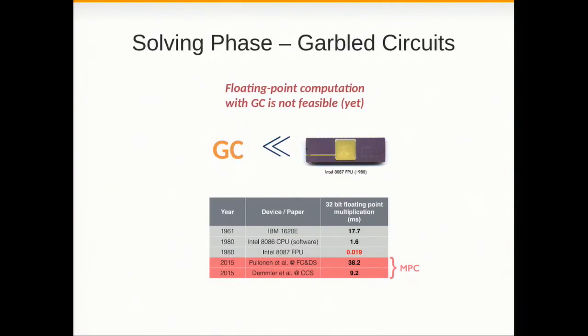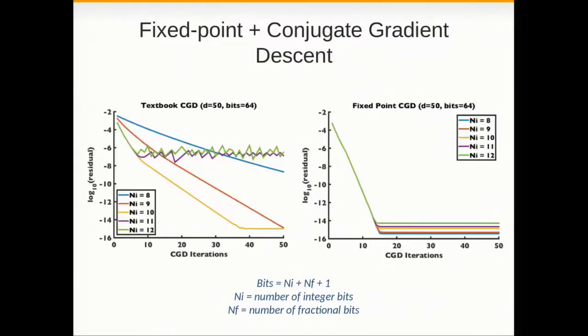But the problem is that in garbled circuits, we cannot do floating point computations yet. We're not quite there yet. And to give you a sense of where we are, we are somewhere in the 60s. So this is like computation in the clear, and this is computation in MPC. But we are getting there. So what happens when you implement the textbook CGD using fixed point arithmetic is that you lose the nice convergence properties of the algorithm in floating point. So in our paper, we show how to fix that and propose a fixed point CGD, a version of CGD that recovers these good convergence properties and is as accurate as a floating point implementation, but of course faster in MPC.